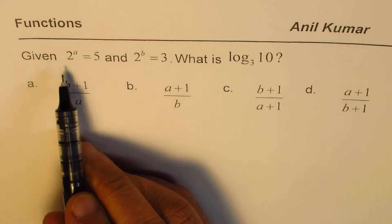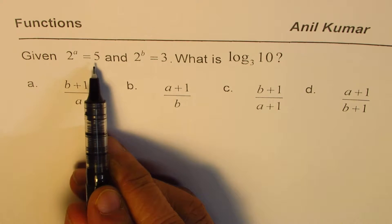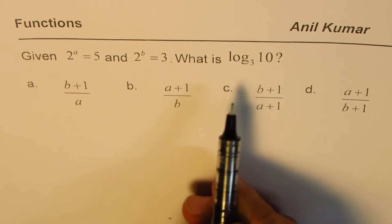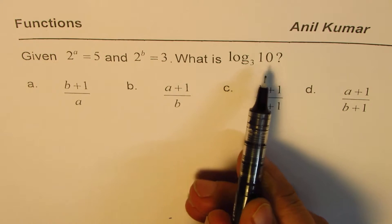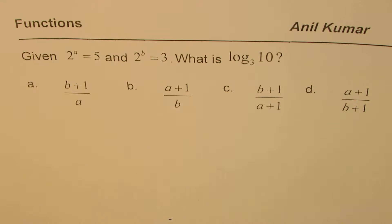We are given 2 to the power of a equals to 5 and 2 to the power of b equals to 3. What is log to the base 3 of 10? You are given 4 choices.